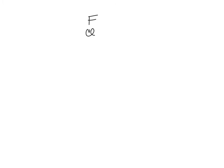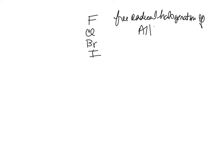The halogens are fluorine, chlorine, bromine, and iodide. When we do free radical halogenation of alkanes, we're talking about an sp3 carbon. What's an alkane? You've learned — one, two, three, four carbons — that's butane.